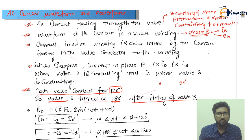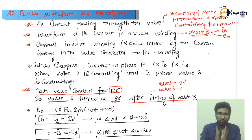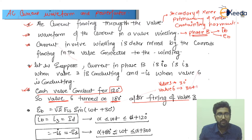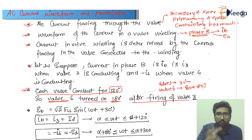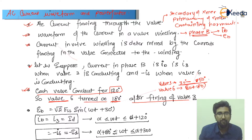Thyristor number three is fired at 30 degrees. So thyristor number six will operate at 30 plus 180 degrees after the conduction of thyristor three. Thyristor number three will operate from 30 to 30 plus 120 degrees, because the conduction time for any thyristor is 120 degrees only. The turn-on time of each thyristor depends on the previous one — so thyristor three operates from 30 to 150 degrees.